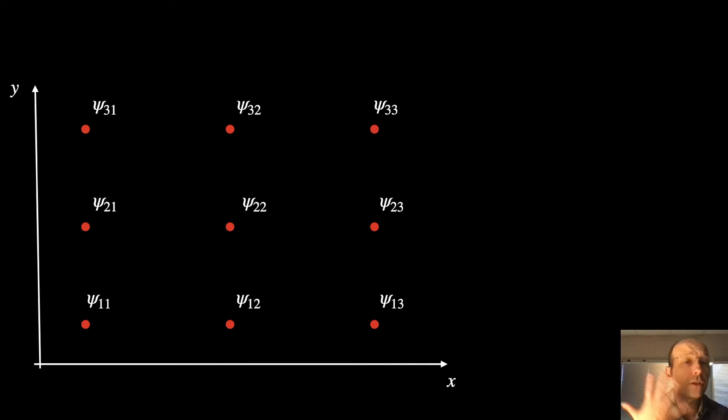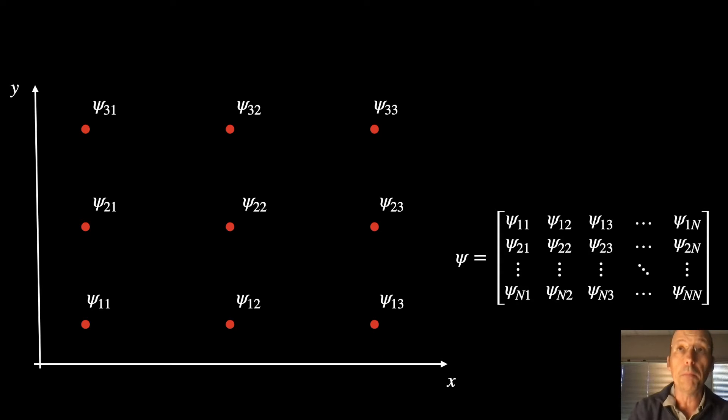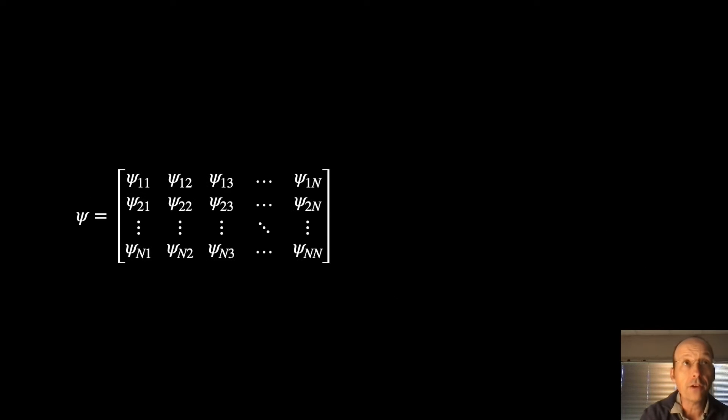So now I have a two-dimensional. Imagine I want a 2D square well. I have two-dimensional finite elements. So I have to break these psi's into psi 1,1, 1,2, 1,3, and so forth. And I could represent that as the following matrix. So psi is a matrix, and that's fine. But that doesn't work.